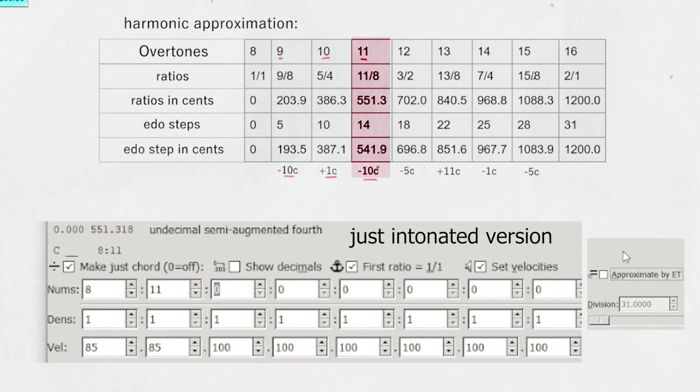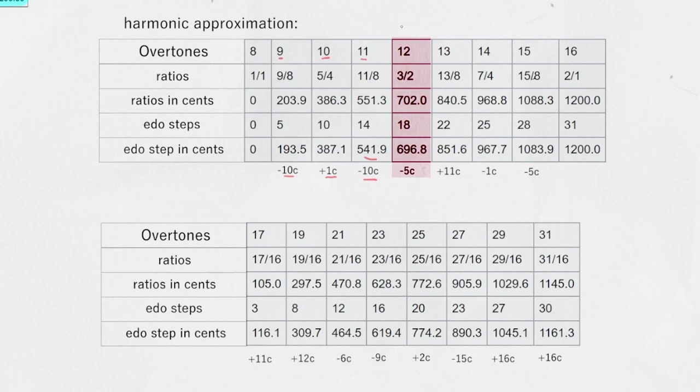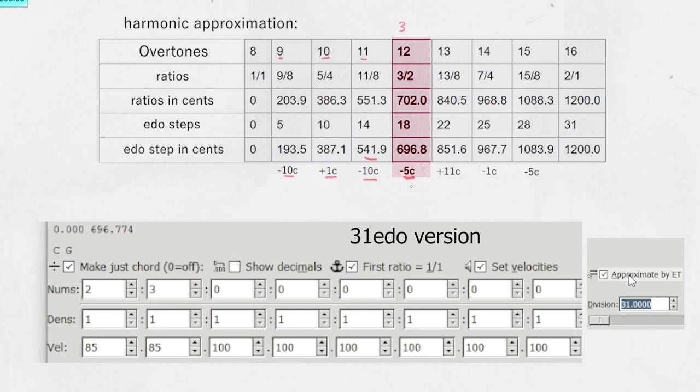A lot of people will say, oh, 10 cents isn't that big of an error. But honestly, this doesn't really sound like an 11th harmonic. It's a lot closer to the novum decimal super fourth. So that's how I tend to hear this. The third harmonic approximation or the 12th harmonic is off by about five cents. So our perfect fifth in 31 is flat by about five cents.